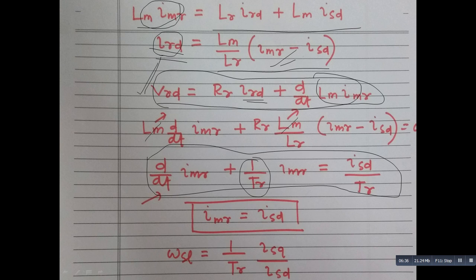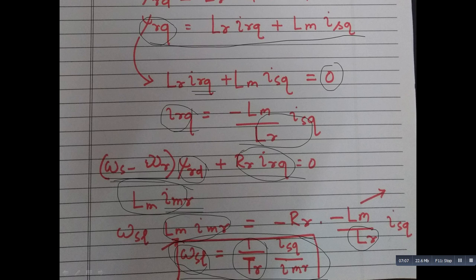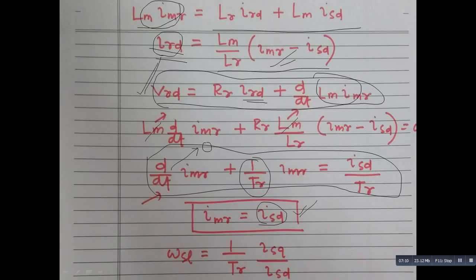Now, one interesting thing, at steady state, there is no change of magnetizing current. So if there is no change of magnetizing current, this part is zero. So your I_mr is becoming equal to I_sd. So at steady state, the magnetizing current is nothing but the stator direct axis current. So now, if you see that previous omega slip equation, this was I_sq by I_mr. So at steady state, I can write that omega_sl is equal to inverse rotor time constant into I_sq by I_sd, because at steady state, this is nothing but the magnetizing current.